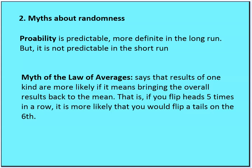Typically, the fact that you've flipped nine heads in a row does not influence the tenth flip. You can't say that after nine flips in a row, the next one is necessarily going to be tails. This brings us to the myth of the law of averages — it says that results of one kind are more likely if it means bringing the overall result back to the mean. That is, if you flip heads five times in a row, it is more likely you would flip tails on the sixth. That is the myth of the law of averages.